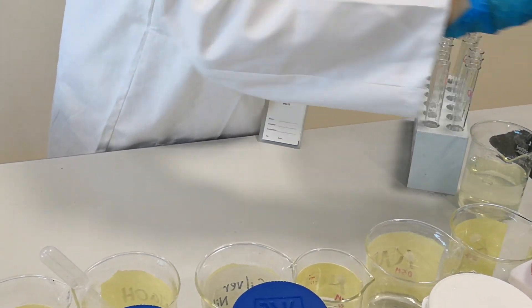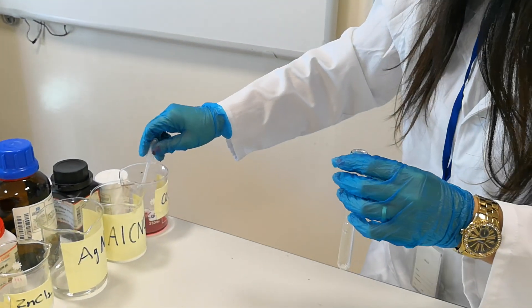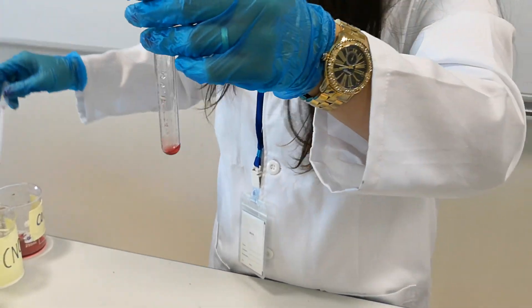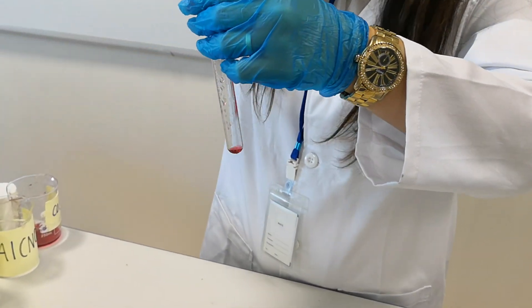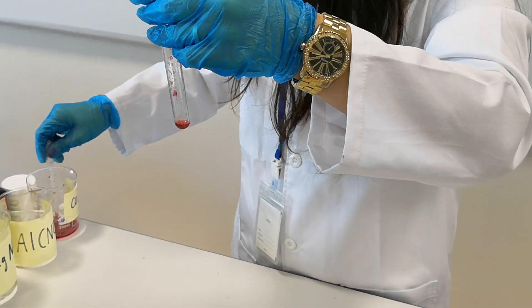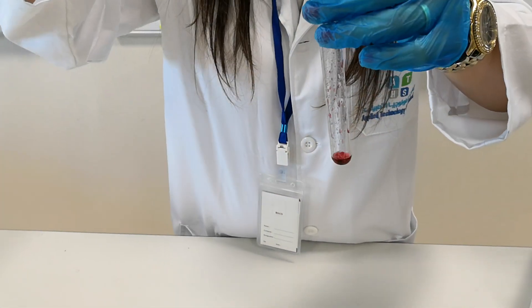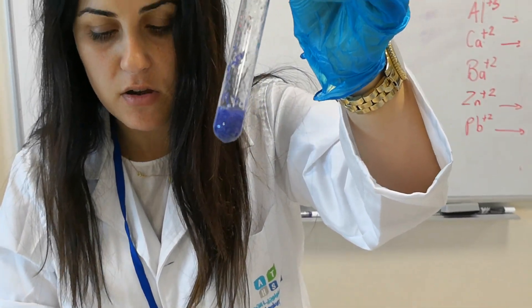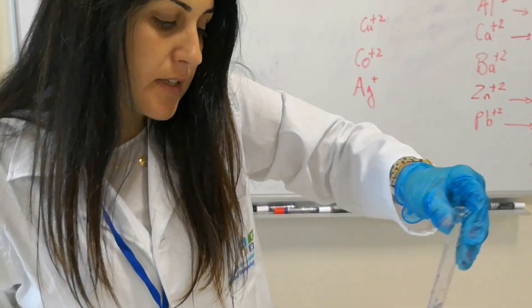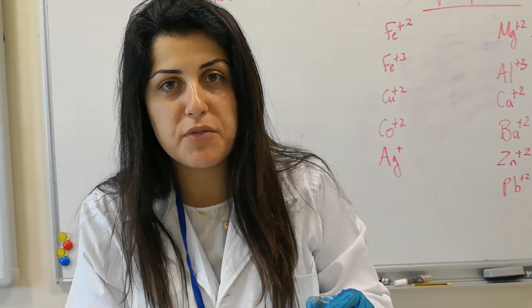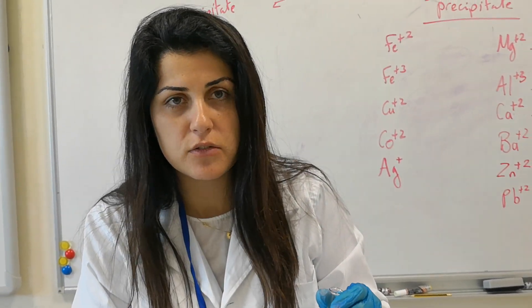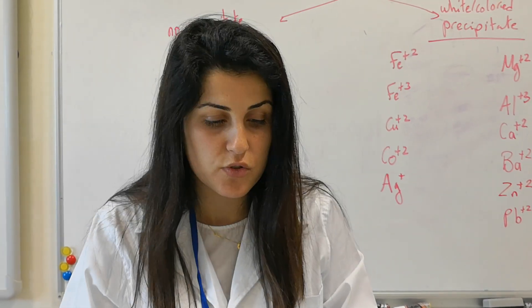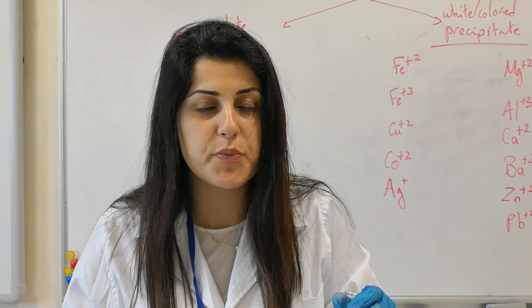Finally, trying cobalt. The cobalt solution already has a dark red color. Adding sodium hydroxide — the color turns to a dark blue precipitate. In the next video I will do a flame test for the metals that did not form a precipitate, and I will do some more tests to differentiate between the colored precipitates.